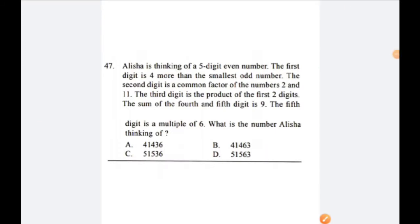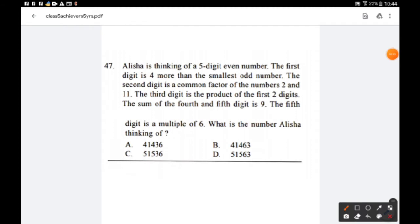Question number 47: Alisa is thinking of a five-digit even number. The first digit is 4 more than the smallest odd number. The second digit is a common factor of 2 and 11. The third digit is the product of the first two digits. The sum of the fourth and fifth digit is 9. The fifth digit is a multiple of 6. Since it is a five-digit even number, options B and D are odd numbers and won't be the answer.